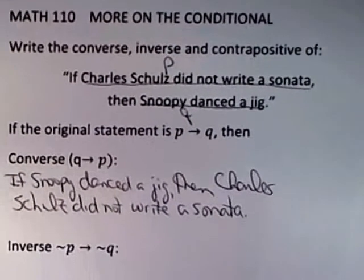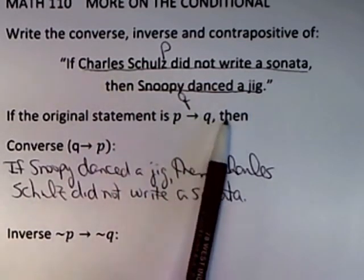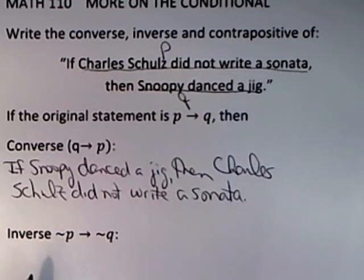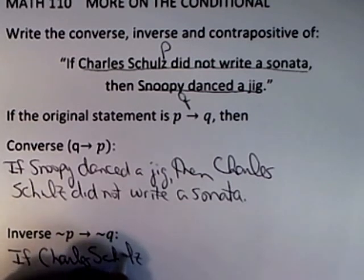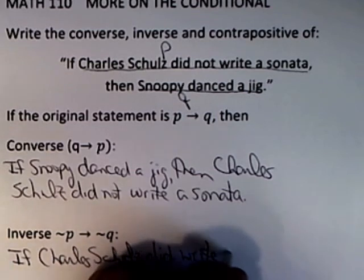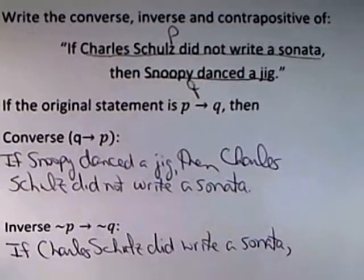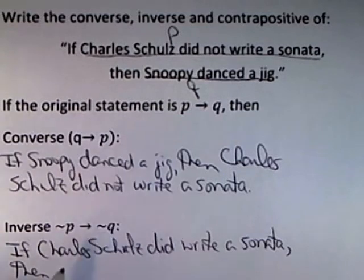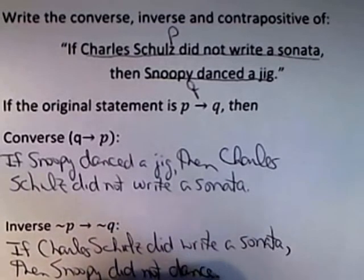How about the inverse of that statement? The inverse of a statement is obtained by negating P and negating Q. So if the original statement was 'If Charles Schulz did not write a sonata, then Snoopy danced a jig,' then not P would be 'Charles Schulz did write a sonata' — we're negating the 'not' — and not Q would be 'Snoopy did not dance a jig.'